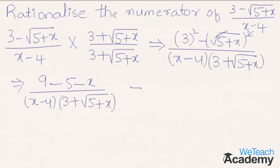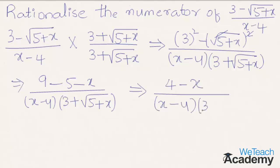Now we get here 9 minus 5, that is nothing but 4 minus x, divided by x minus 4 into 3 plus under root 5 plus x.